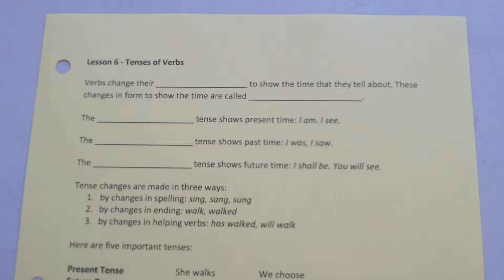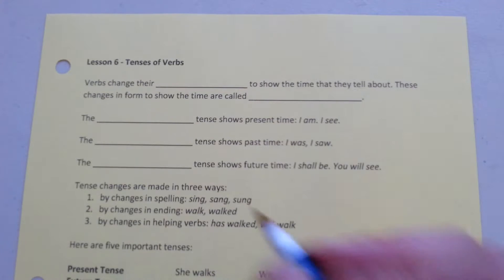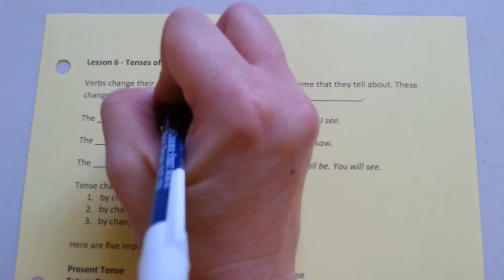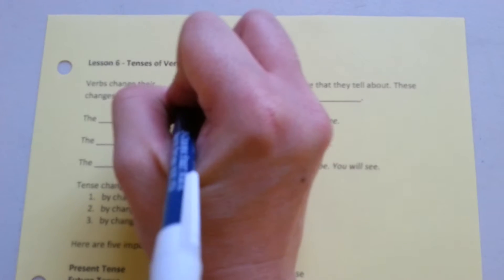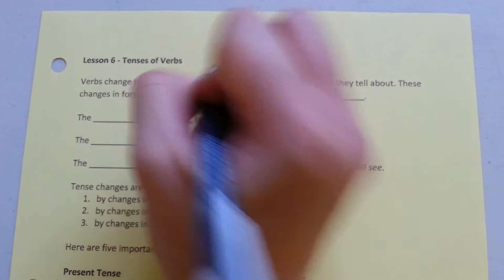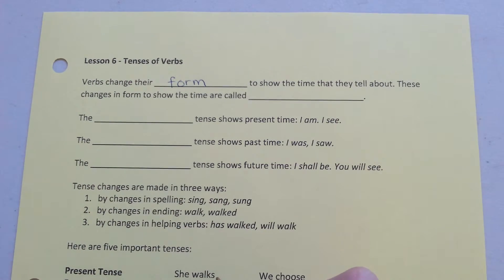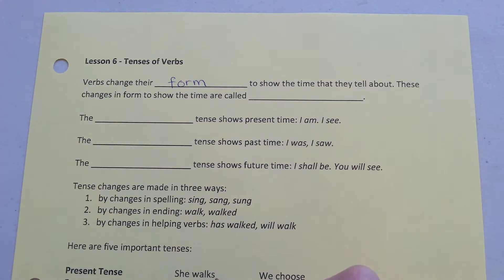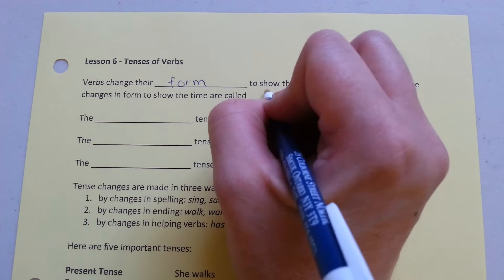Lesson 6, Tenses of Verbs. Verbs change their form to show the time that they tell about. These changes in form to show the time are called tenses.